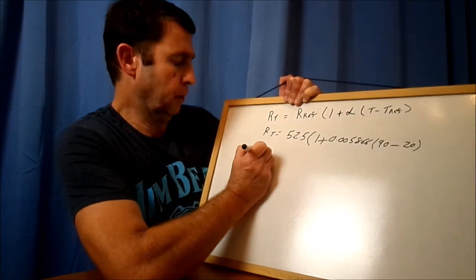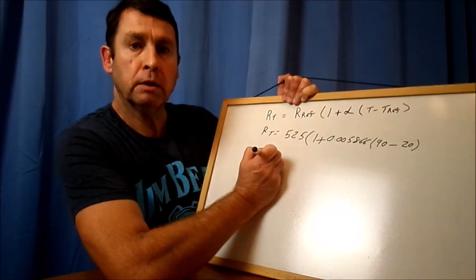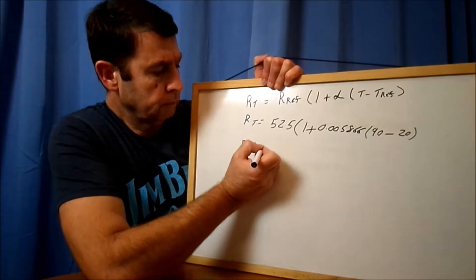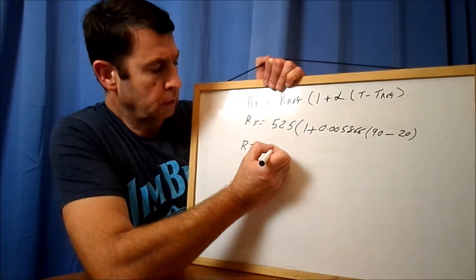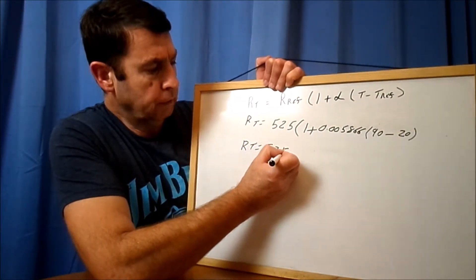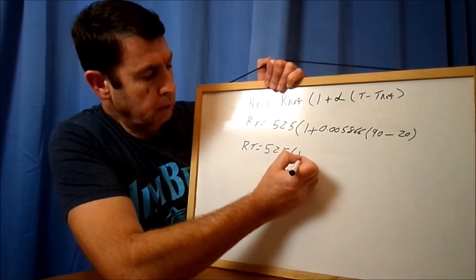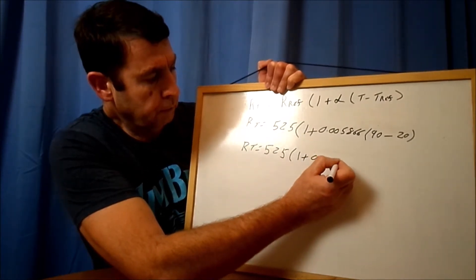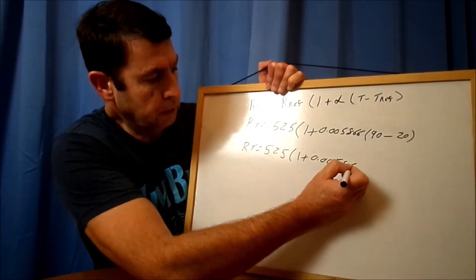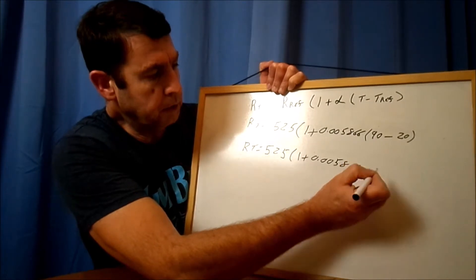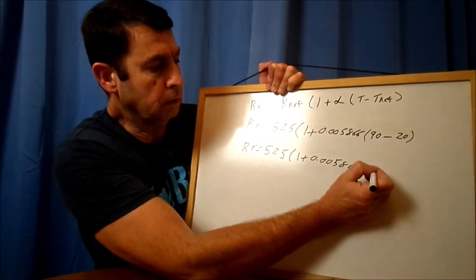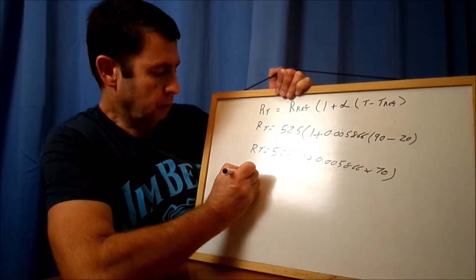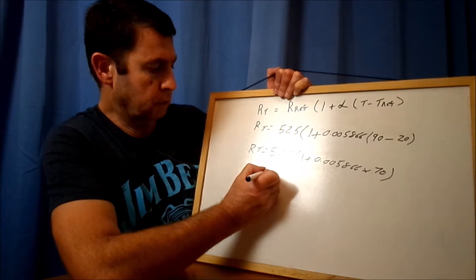Then we multiply that by the temperature, so that's the new temperature, and we said that's 90 degrees. Subtract the reference temperature, and we said the reference temperature is 20 degrees. So let's start breaking it down bit by bit. RT is equal to 525.